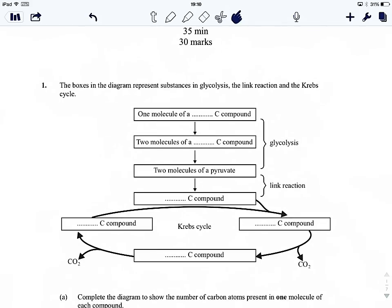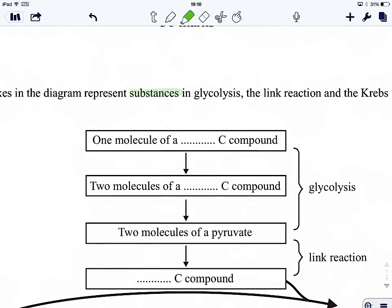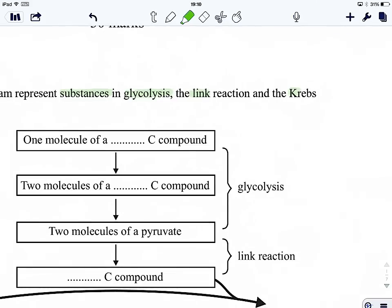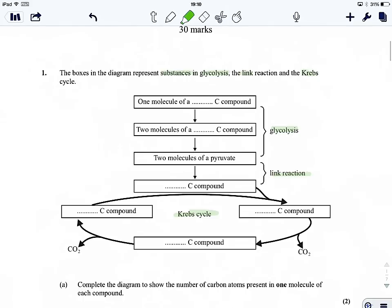So here we have a diagram of, it says glycolysis, link reaction and Krebs cycle. And the first thing I'm going to highlight, it's always good to highlight key things. So it's representing different substances in glycolysis, link and Krebs. And we've got it broken down by sections, there's glycolysis, there's link and all of this here is Krebs cycle. So the first task we have to do is to complete the diagram to show the number of carbon atoms present in one molecule of each compound. So let's have a little look through.